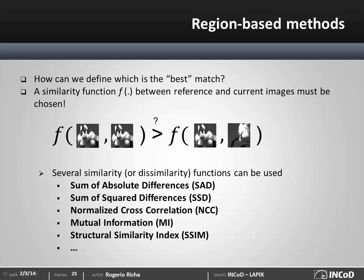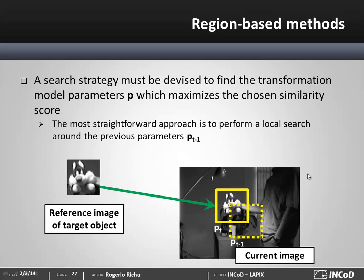In the literature, several similarity measures have been used. For instance, the sum of absolute differences, sum of squared differences, normalized cross-correlation, mutual information, and the structural similarity index used in compression, just to name a few. You can click on the link in the video for a more detailed description of these measures and their properties. So, we have learned that for tracking we need to choose an appearance model.